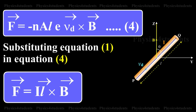Substituting equation 1 into equation 4, F = IL × B. This total force on all moving free electrons is the force on the current-carrying conductor placed in the magnetic field.